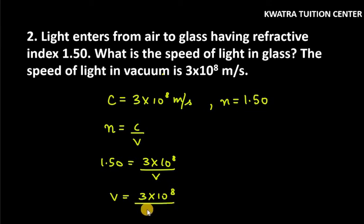So 3×10^8 over 1.5. You get 1.5 and 3 will get cancelled out and you will get 2×10^8 meters per second.